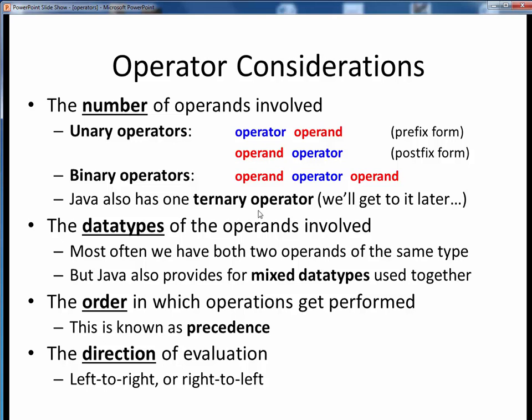Interestingly, Java also has one ternary operator, which involves three operands, and we'll encounter this one later in the course when we talk about logical structures.